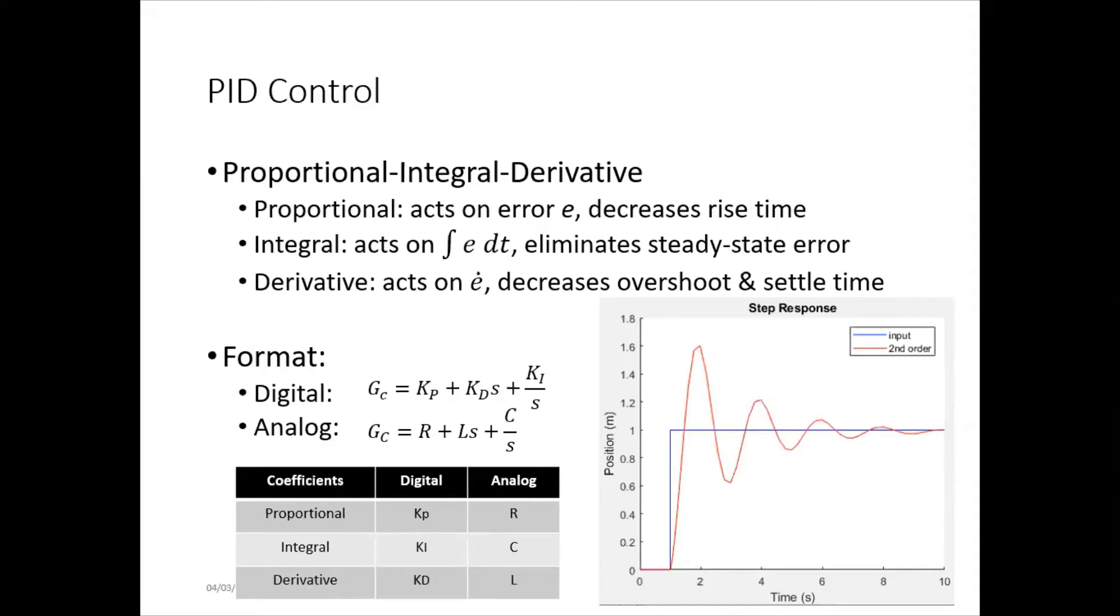Then derivative control acts on derivative of the error. This decreases the overshoot and the settling time. So, the overshoot is how far past the desired the system goes. Because the proportional control is trying to bring it back up to here, but then it's going so fast that it goes too far in the other direction. And then the derivative control helps to slow that down.